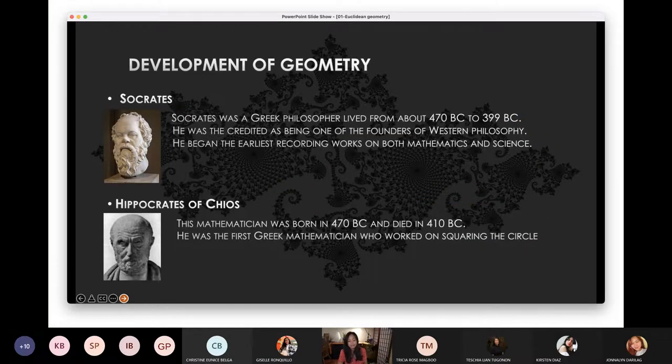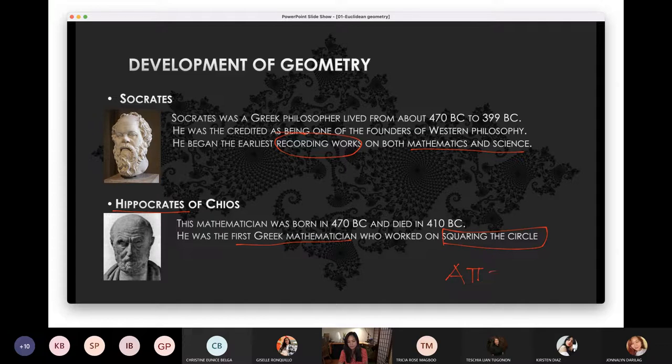The next ones are Socrates and Hippocrates. Socrates is very known with his contribution in philosophy and literature. But he actually has some contribution in mathematics and science, especially in his recordings of his work. The next one is Hippocrates. He's the first Greek mathematician. He works with squaring the circles. If you remember, the area of a circle is pi r squared. So why is that squared? Hippocrates has something to say with that.